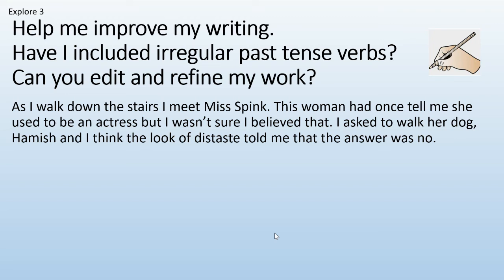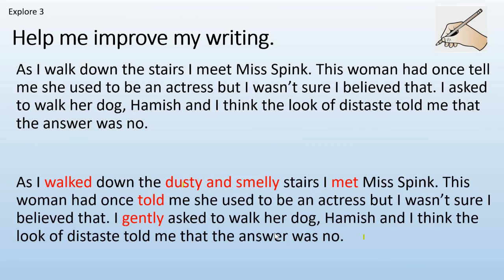Help me improve my writing. Have I included irregular past tense verbs? Can you edit and refine my work? As I walk down the stairs, I meet Miss Bing. This woman had once told me she used to be an actress, but I wasn't sure I believed that. I asked to walk her dog, Hamish, and I think the look of distaste told me that the answer was no. Pause the video and edit this work. The improved version: as I walked down the dusty and smelly stairs, I met Miss Bing. I gently asked to walk her dog. Here we're fixing tenses to past tense and adding description.